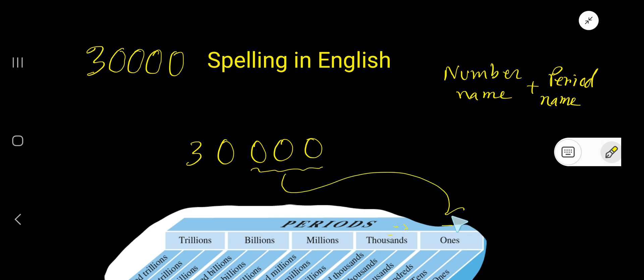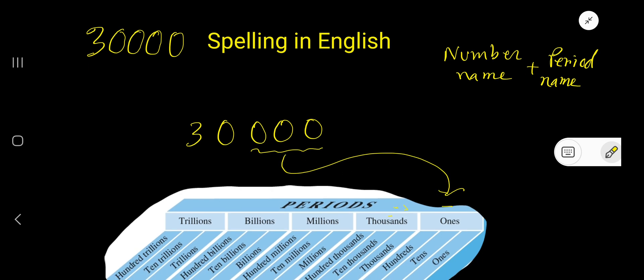The name of the first period is ones period, and the name of the second period is called thousands period. You can separate these two periods by using a comma. This is thousands period, this is ones period.